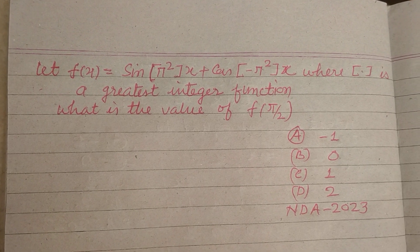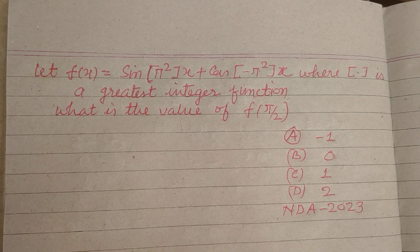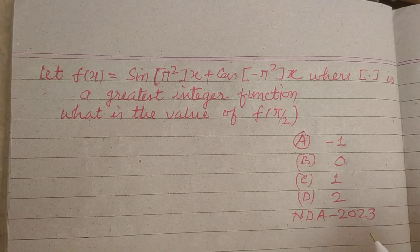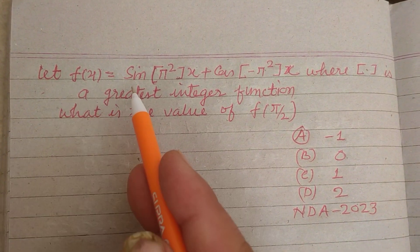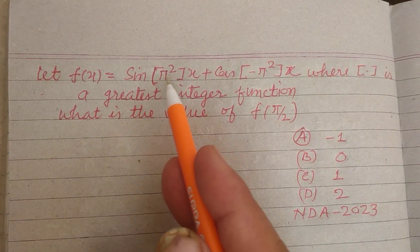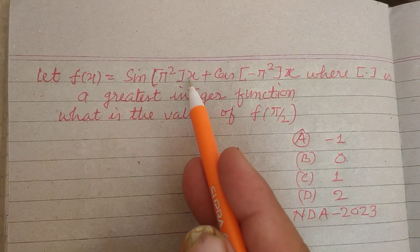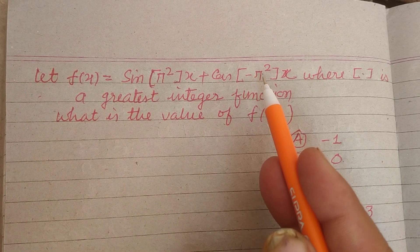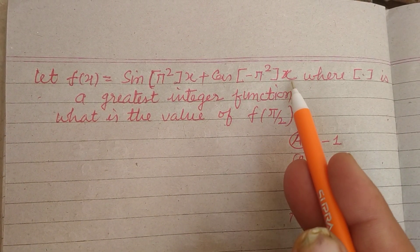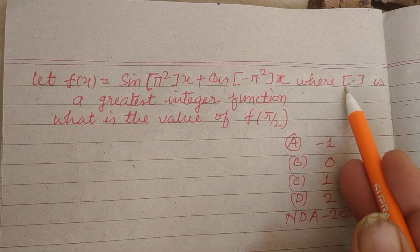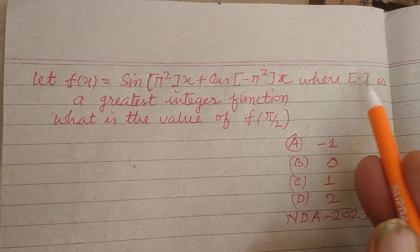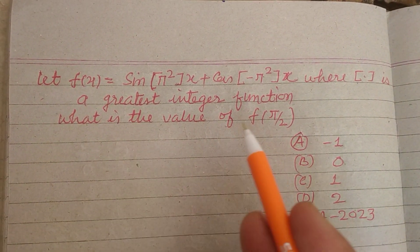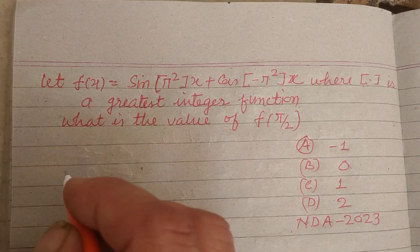Hello students, and a warm welcome to this YouTube channel. This is a question from NDA 2023. Let f(x) = sin(⌊π²⌋ · x) + cos(⌊-π²⌋ · x), where the capital bracket denotes the greatest integer function. Find the value of f(π/2).